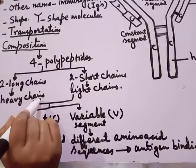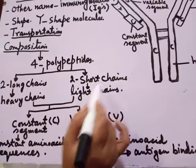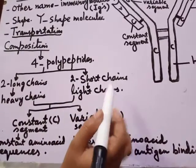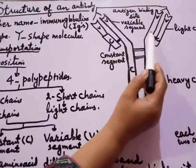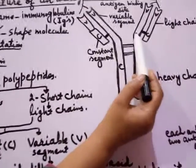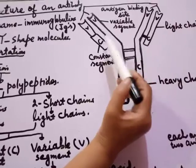They are also called heavy chains, while the two short chains are called light chains. You can see from the figure these two long chains are heavy chains and the other short chains are light chains.